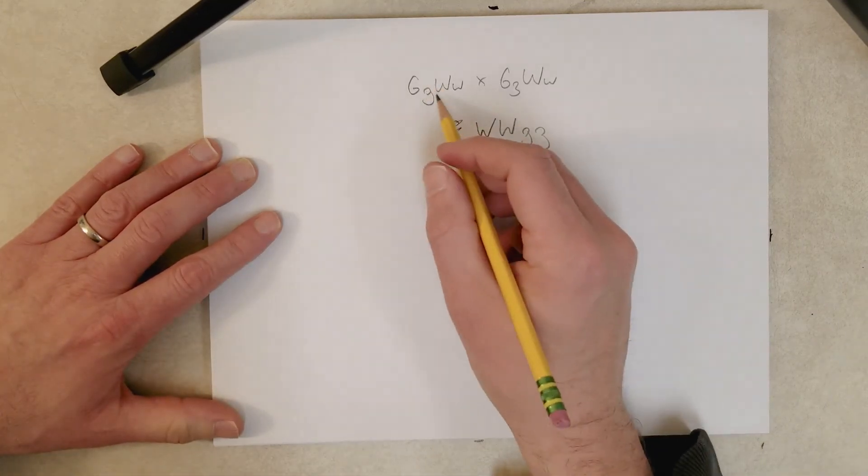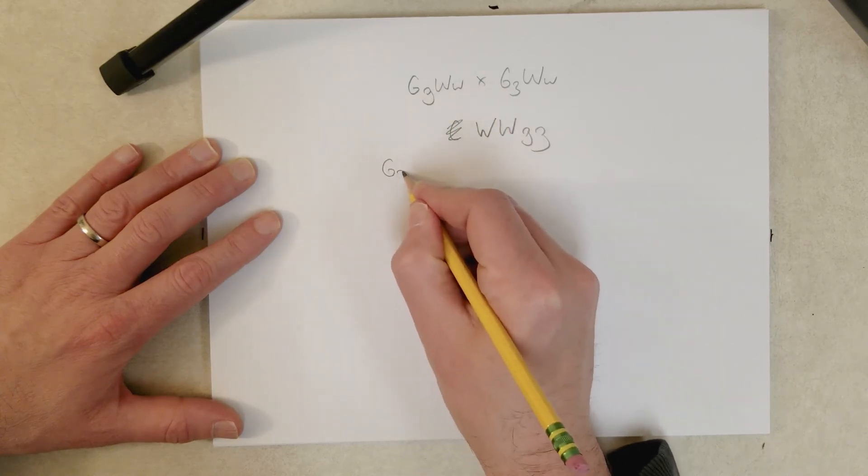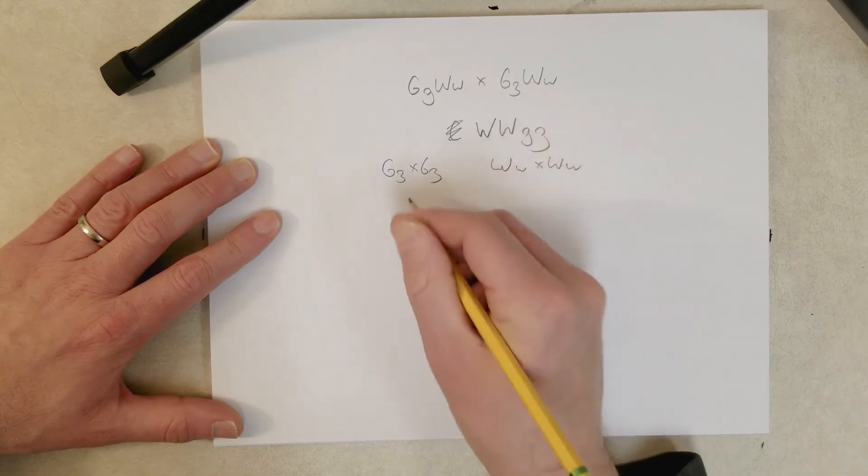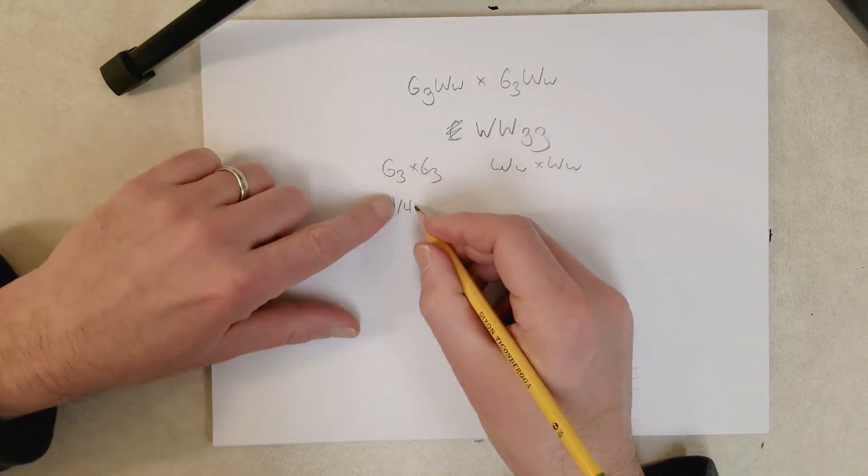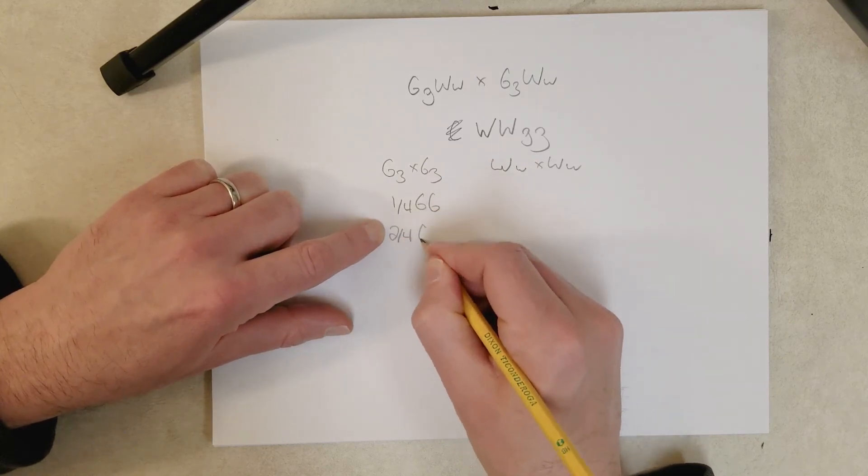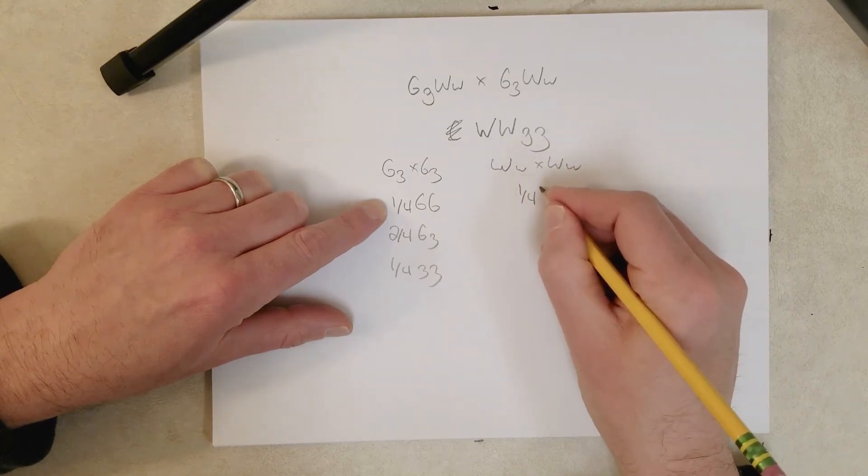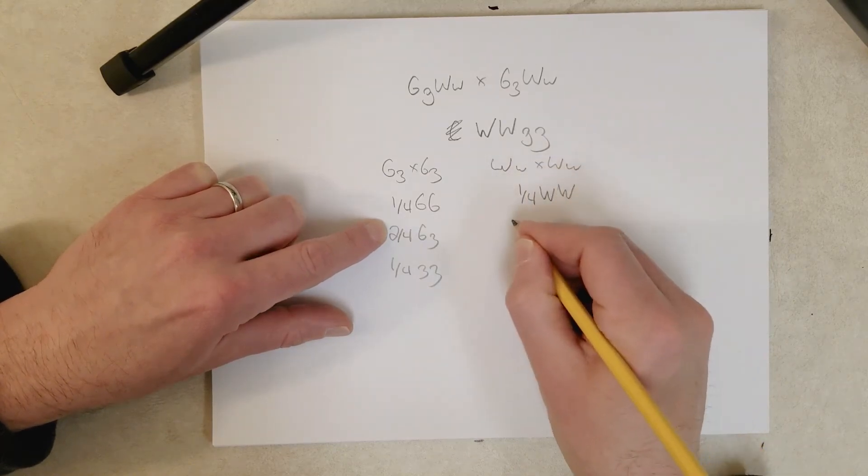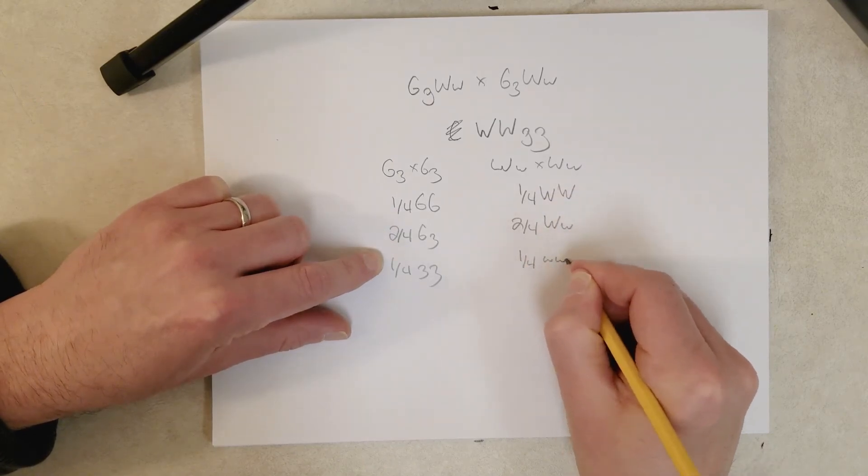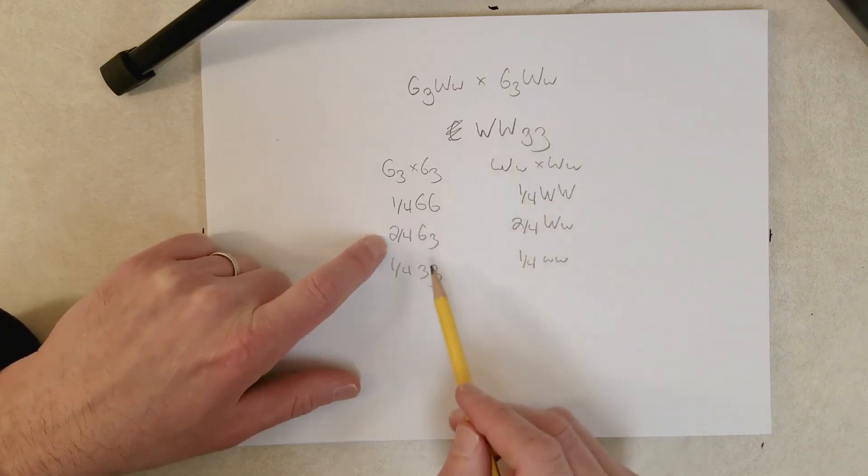What you can do is just take each character separately, just figure out the ratios for those characters separately, and I have this memorized, but you could use a Punnett square if you don't have these ratios memorized.